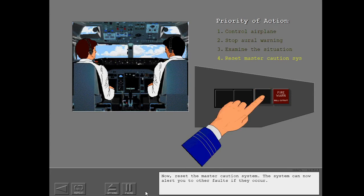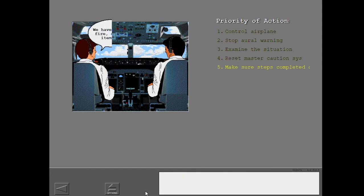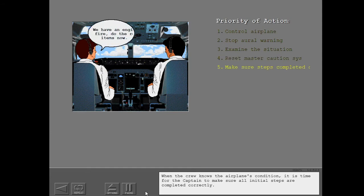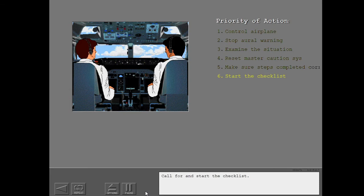Now, reset the master caution system. The system can now alert you to other faults if they occur. When the crew knows the airplane's condition, it is time for the captain to make sure all initial steps are completed correctly. Call for and start the checklist.